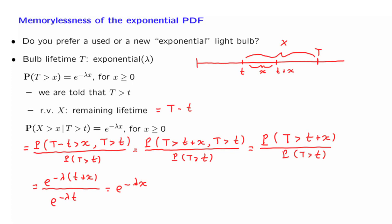What do we observe here? The probability that the used light bulb will live for another x time units is exactly the same as the corresponding probability that a new light bulb will be alive for another x time units. So new and used light bulbs are described by the same probabilities and are probabilistically identical. Differently said, the used light bulb does not remember and is not affected by how long it has been running. And this is the memorylessness property of exponential random variables.